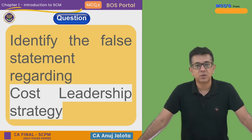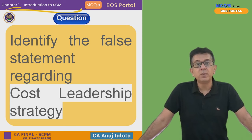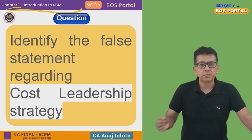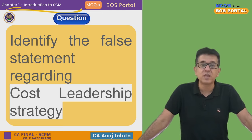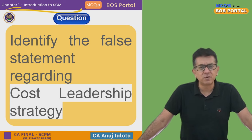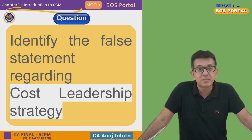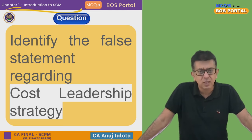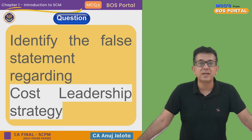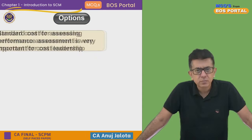Let's start. Identify the false statement regarding cost leadership strategy. What do you mean by cost leadership strategy? Cost leadership means that we try to have the least cost in the industry. We want to sell the product at the least possible price and capture a good amount of market share. For that, we should always have cost leadership — the least possible costs in the entire industry. What is the false statement? Give me the four options.